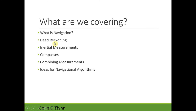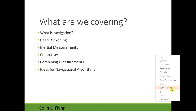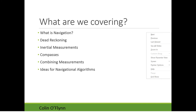I'll be covering what navigation is and the background of it. Some of the initial types used — dead reckoning is one you'll probably use a lot in your robot. I'll talk about inertial measurements; one of the chip sensors in your kit can do some of these. As well as using a compass — one of the chips in the kit has this ability. Also how we combine measurements using different filtering techniques, and overall navigational algorithms for getting your robot to a goal.